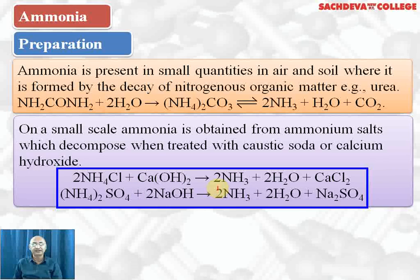Ammonia cannot be dried over sulfuric acid because it is basic and forms ammonium sulfate. It cannot be dried over calcium chloride because it forms a complex with calcium chloride. It cannot be dried with P₂O₅ because it will form ammonium phosphate. So calcium oxide, or quicklime, is used for drying ammonia.